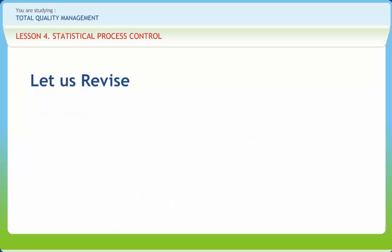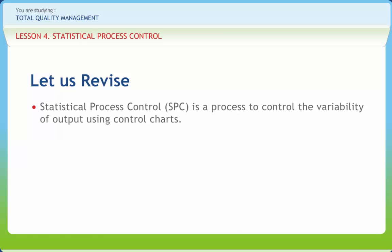Before we end, let us briefly revise what we have studied so far. Statistical process control SPC is a process to control the variability of output using control charts. Design of experiments is an application of statistical methods for producing high quality robust products and process designs. On a control chart,